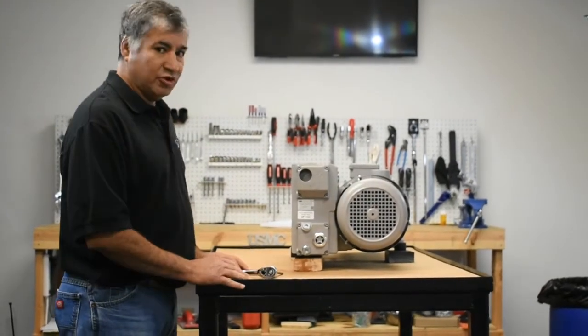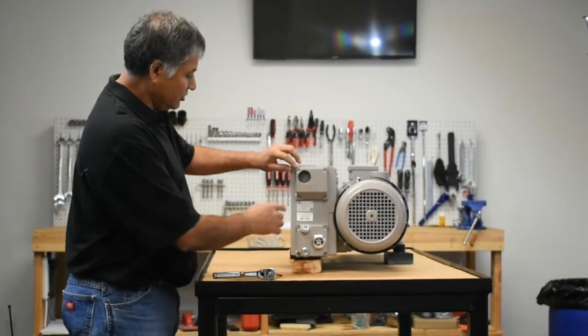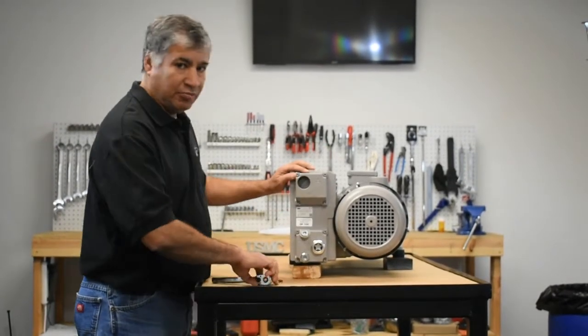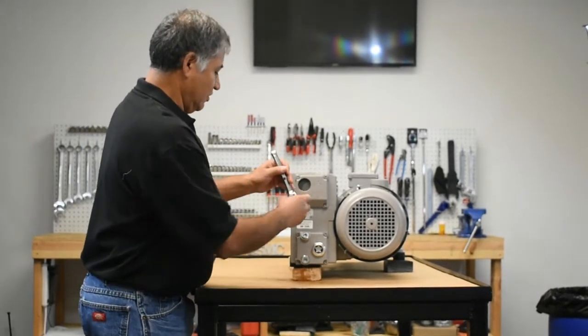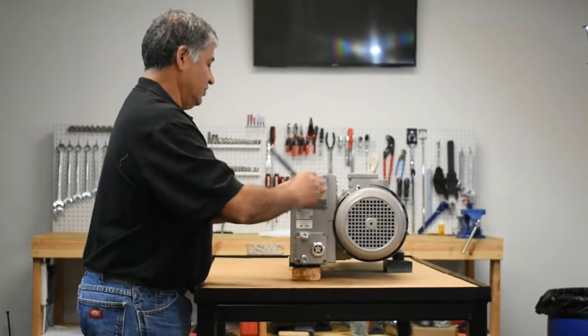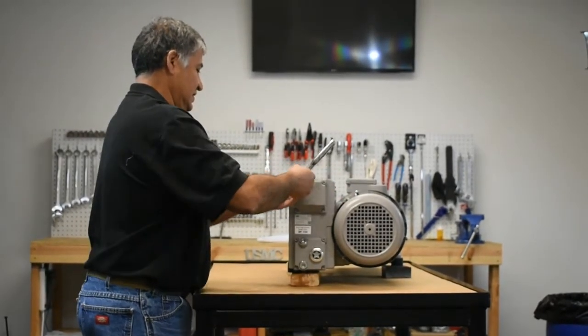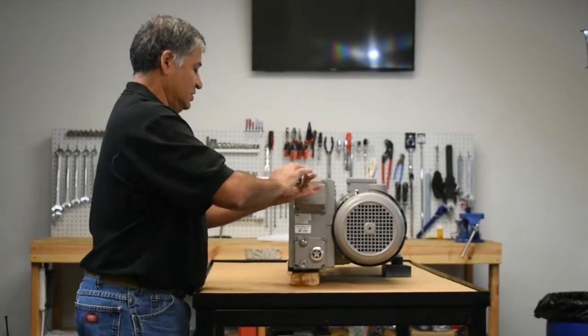Okay, step number three. We are going to remove the exhaust filter. The exhaust filter is on the top half of this tank. There are four five millimeter bolts that hold this together. So all you have to do is go in here and remove these four small bolts.